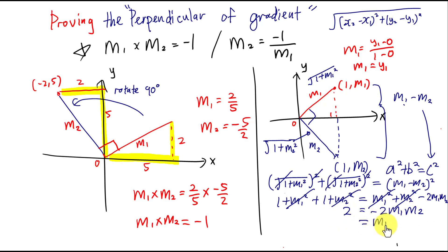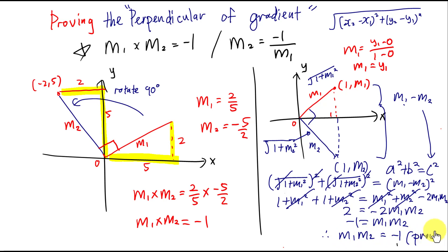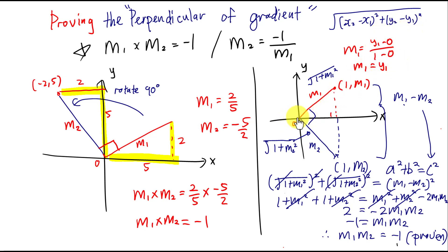Dividing both sides by negative 2: m1 × m2 = negative 1. Proven! So rewriting the result: m1 multiplied by m2 equals negative one. The second method is longer and uses both the Pythagorean theorem and distance concepts, but I purposely chose the origin (0, 0) to make it easier to find the gradients and the lengths.